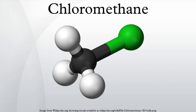Chloromethane is employed as a methylating and chlorinating agent in organic chemistry. It is also used in a variety of other fields: as an extractant for greases, oils, and resins; as a propellant and blowing agent in polystyrene foam production; as a local anesthetic; as an intermediate in drug manufacturing; as a catalyst carrier in low-temperature polymerization; as a fluid for thermometric and thermostatic equipment; and as a herbicide.